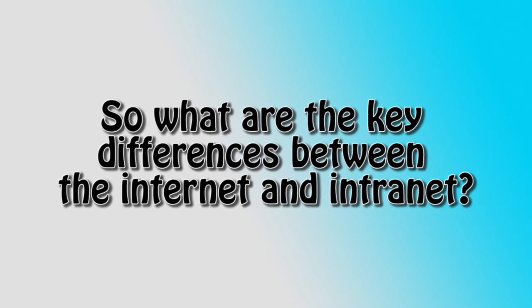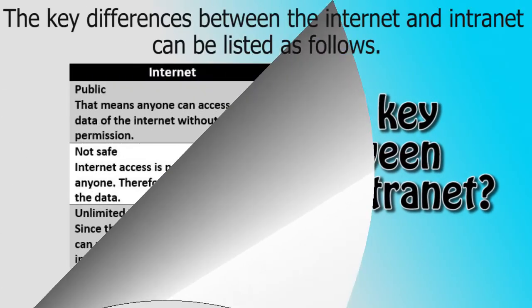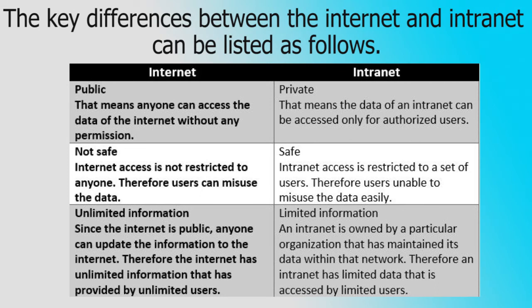So what are the key differences between the internet and intranet? The internet is public — anyone can access the data of the internet without any permission — but the intranet is private, meaning the data of an intranet can be accessed only by authorized users. The internet is not safe because internet access is not restricted to anyone, so users can misuse the data. But the intranet is safe because intranet access is restricted to a set of users, and therefore users are unable to misuse the data easily.